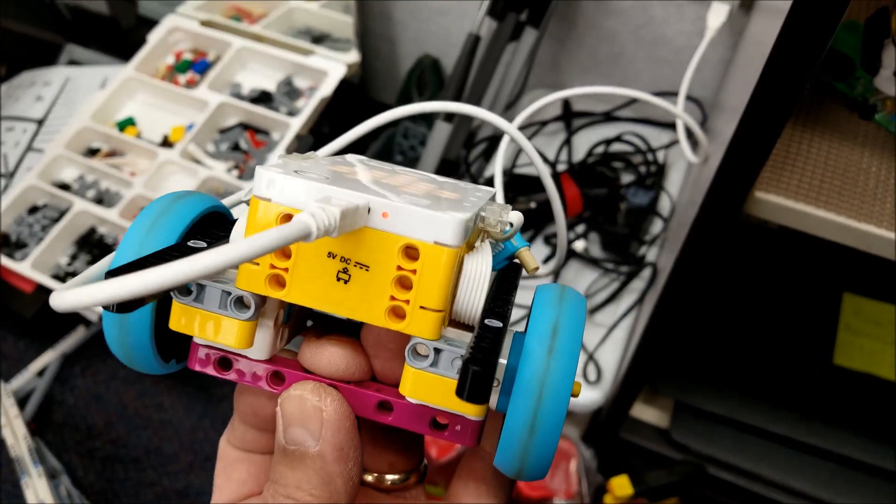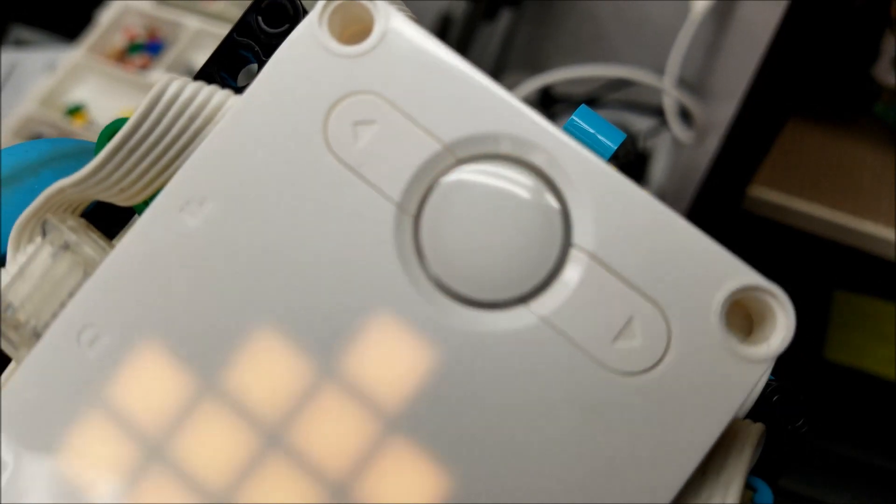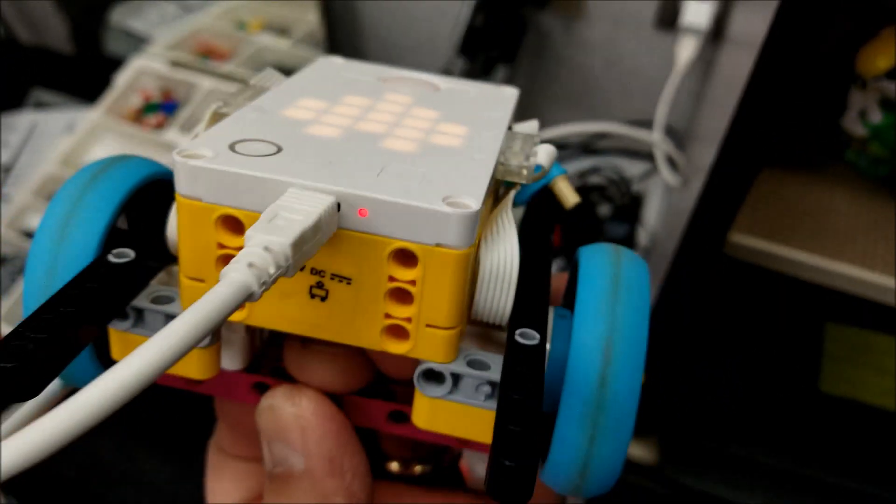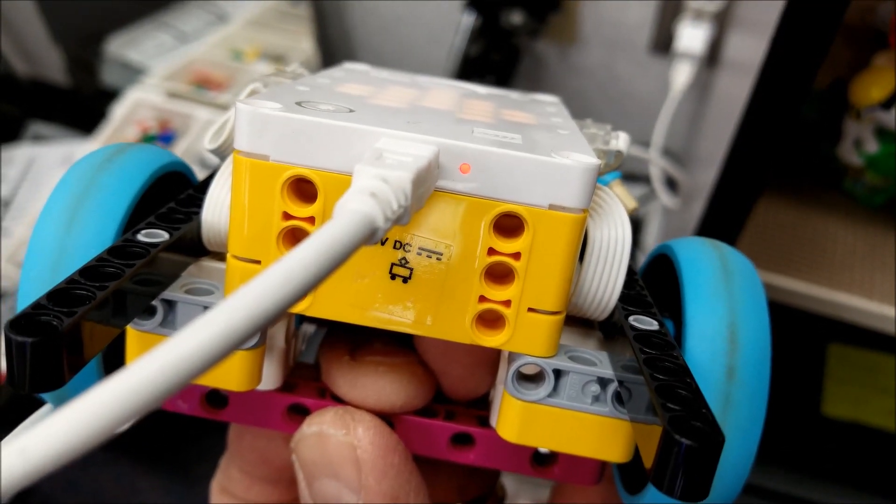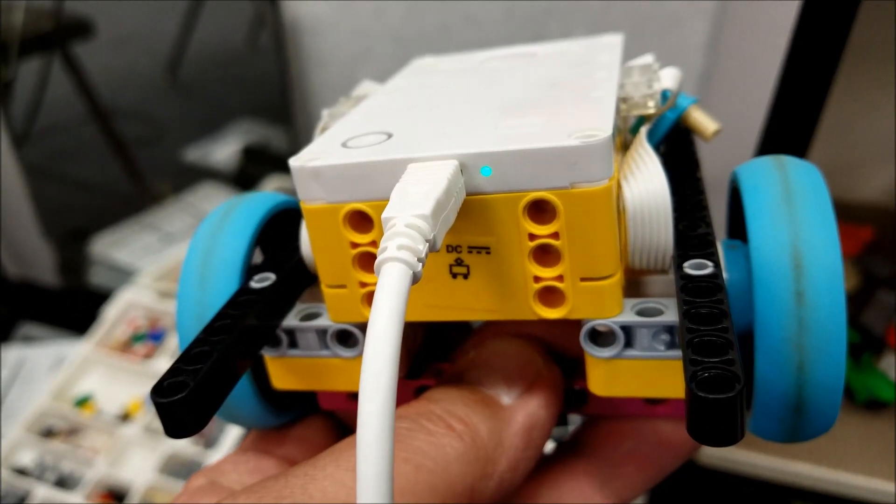When charging your SPIKE Prime robot, this red light will be on and this light will be flashing here on your hub. That's how you know you're charging. This light should turn green when everything's good, and when it's green, it is charged.